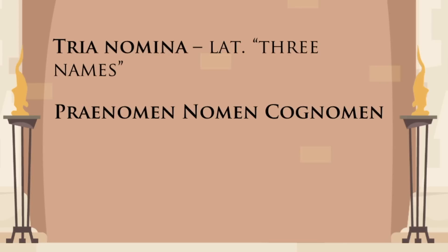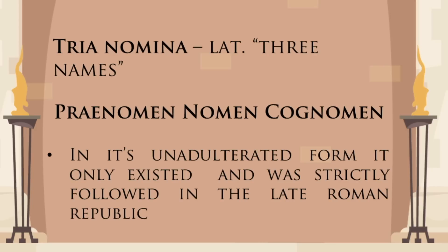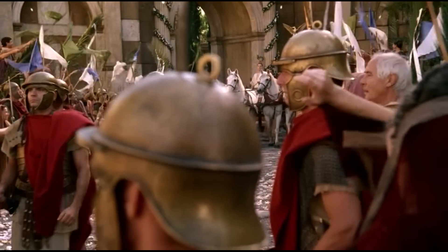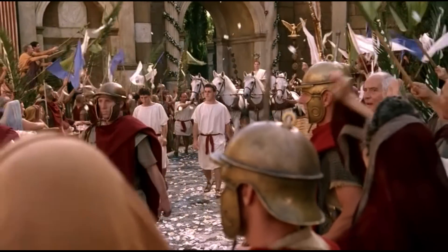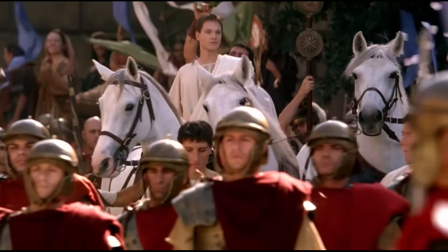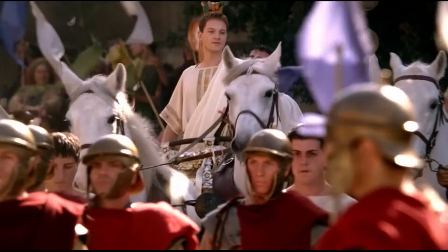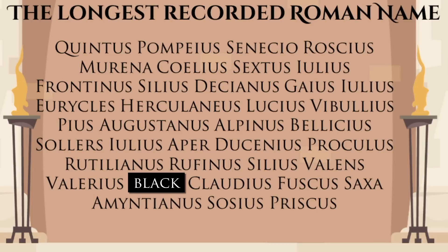The combination of praenomen, nomen and cognomen is known as tria nomina, which means three names. It is often presented as the definitive naming system of ancient Rome, but this is somewhat misleading. As a rigidly defined and widely accepted convention, tria nomina only existed for a little more than a century. In the next video, I'm going to show you how the Romans already started to subvert this custom in the early empire. The man who had 38 names lived in the second century AD, and his name does not follow the tria nomina convention at all.